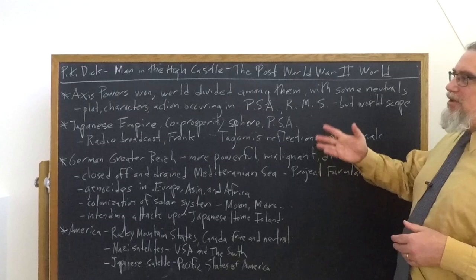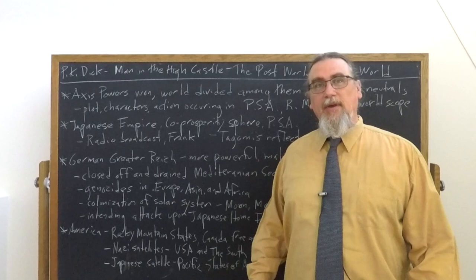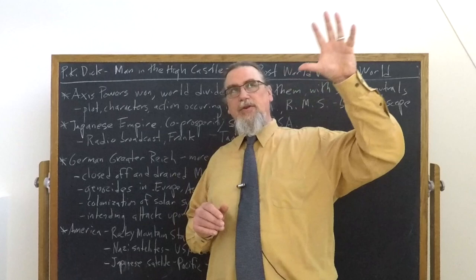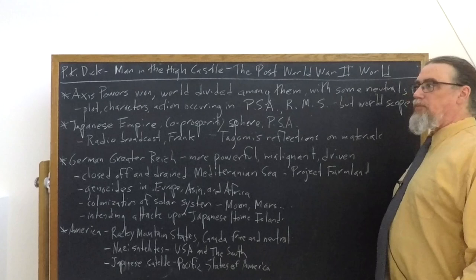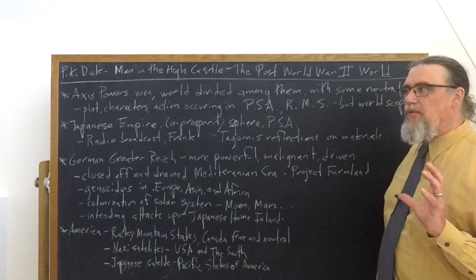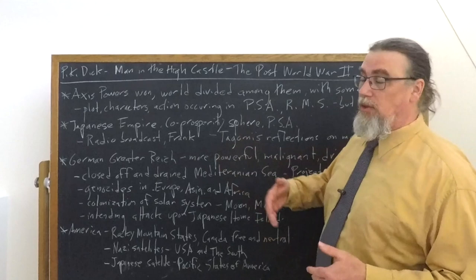What we have is a Japanese empire being depicted as, in many respects, becoming more and more humane — not only in its official policy, but also in the approaches of its main Japanese characters. But it is, to some degree, not just less powerful, but behind the Nazi German regime.